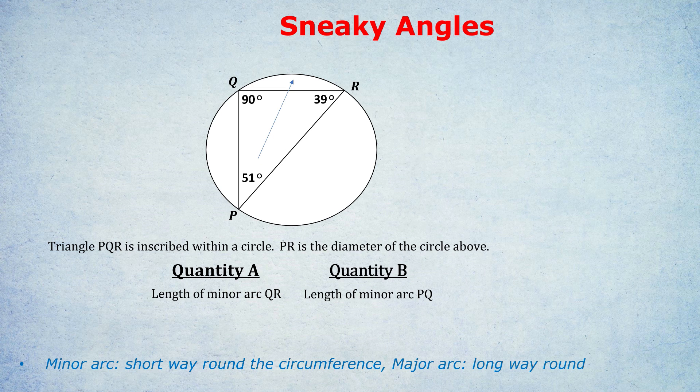Look at this arrow. The 51 degree angle P is opposite to the arc QR. Just quickly, why is it called a minor arc?